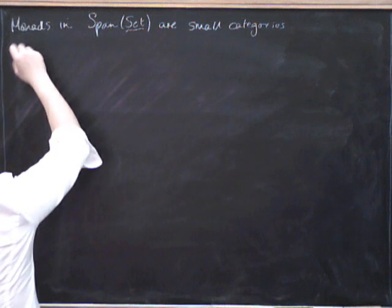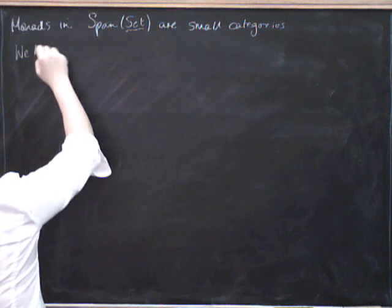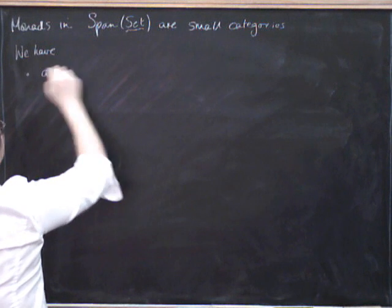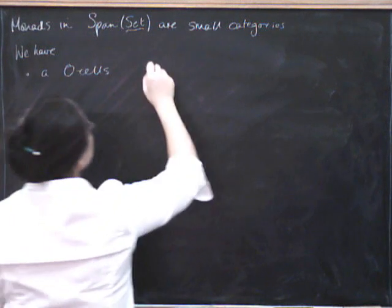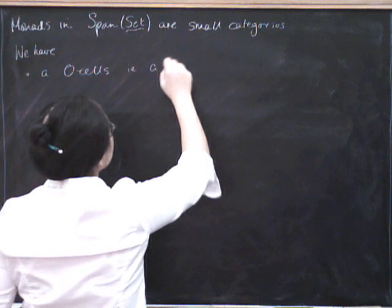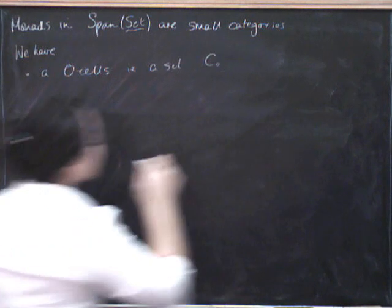We have a zero cell. Well, the zero cells in spans set are just sets. So we've got a set, which I'm going to suggestively call C0.